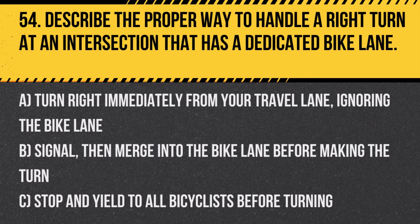Question 54: Describe the proper way to handle a right turn at an intersection that has a dedicated bike lane. A. Turn right immediately from your travel lane, ignoring the bike lane. B. Signal, then merge into the bike lane before making the turn. C. Stop and yield to all bicyclists before turning. Answer: B. Signal, then merge into the bike lane before making the turn. This method minimizes conflicts with cyclists and is the legal way to make right turns across bike lanes.